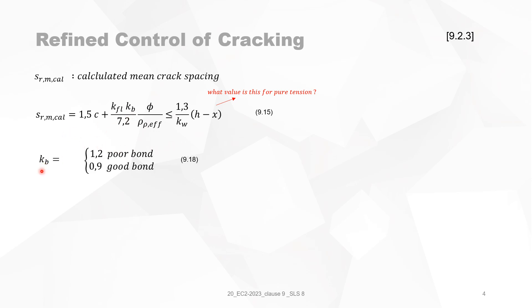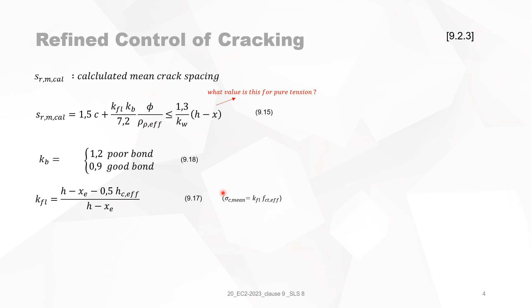KB is a factor reflecting the bond between the reinforcement and the concrete. KFL is the factor representing the effect of curvature on crack width opening. From previous videos, in AC,effective — the effective area of concrete around the bar in tension — the mean concrete tensile strength equals a proportional factor KFL multiplied by FCTM or FCT,effective. KFL is given by formula 9.17.